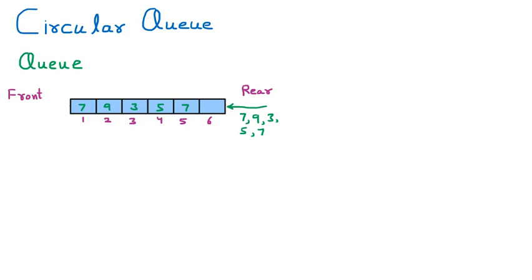If we want to delete elements, deletion takes place from the front side. We delete 7, then 9, then 3 from the front, so these first three spaces are now blank. Now if we want to insert one more element, insertion takes place from the rear side and deletion from the front side. We insert element 6 at the rear.